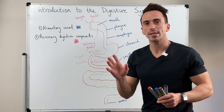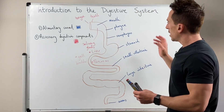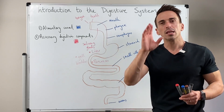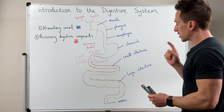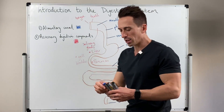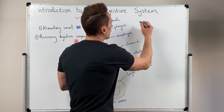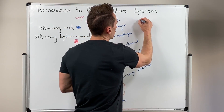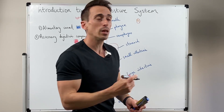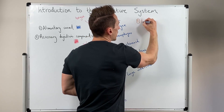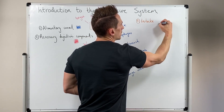And these are all various aspects of the accessory structures. Now what I want to talk about is the function of the digestive system. So the first function is ingestion — number one — which is taking food in, or eating.